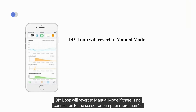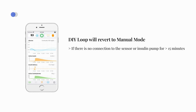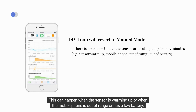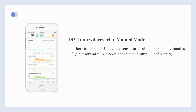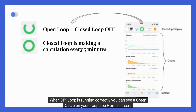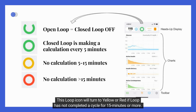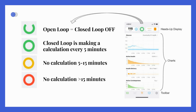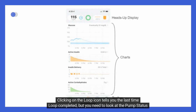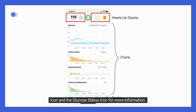DIY Loop will revert to manual mode if there is no connection to the sensor or pump for more than 15 minutes. This can happen when the sensor is warming up, when the mobile phone is out of range, or has a low battery. When DIY Loop is running correctly, you can see a green circle on your Loop app home screen. This Loop icon will turn yellow or red if Loop has not completed a cycle for 50 minutes or more. Clicking on the Loop icon tells you the last time Loop completed, but you need to look at the pump status icon and the glucose status icon for more information.